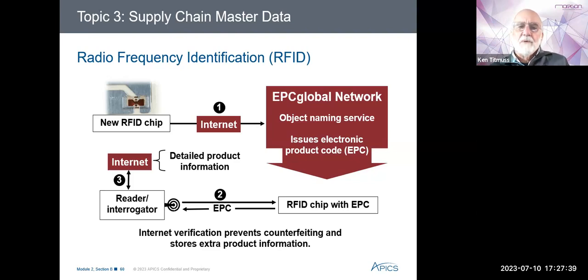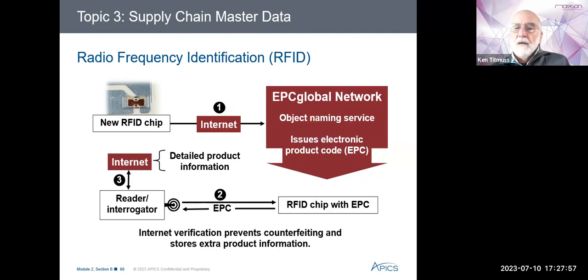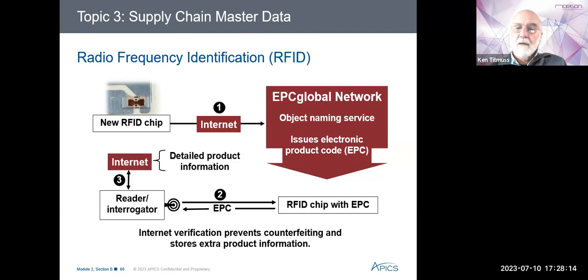You might often find an RFID tag on the carton of products coming into the supermarket so it can be identified easily, but not so much on the individual product. A new RFID chip is registered online with the EPC Global Network Object Naming Service, which gives it a unique electronic product code (EPC). The chip is not a counterfeit because only this service can issue these codes. A reader — also called an interrogator — sends a signal out and retrieves the EPC code from the tag.